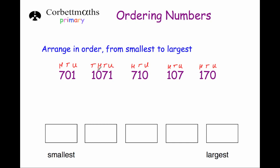Clearly 1071 will be the biggest because it has a digit in the thousands column, whereas all the rest only have hundreds. For the smallest, 107 and 170 both have ones in the hundreds column, so we look at the tens: 107 has a zero and 170 has a seven, so 107 is smaller than 170.